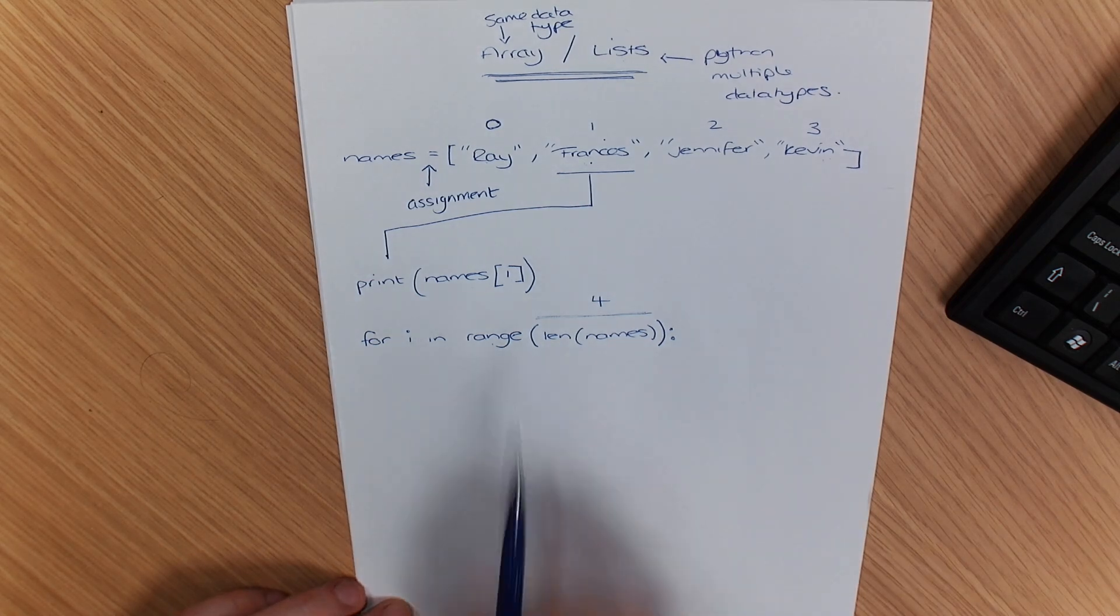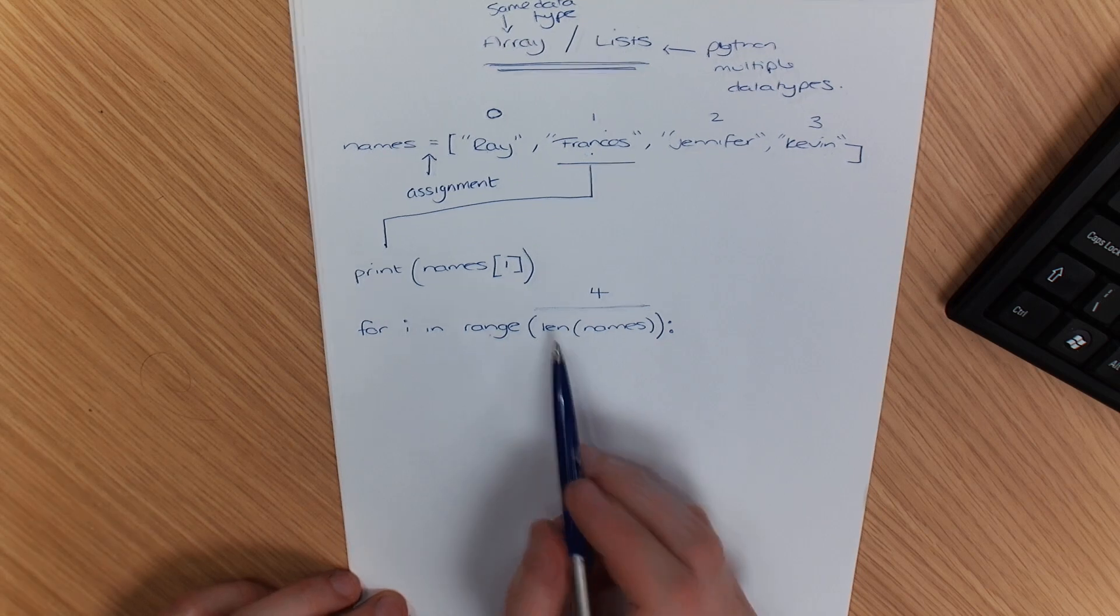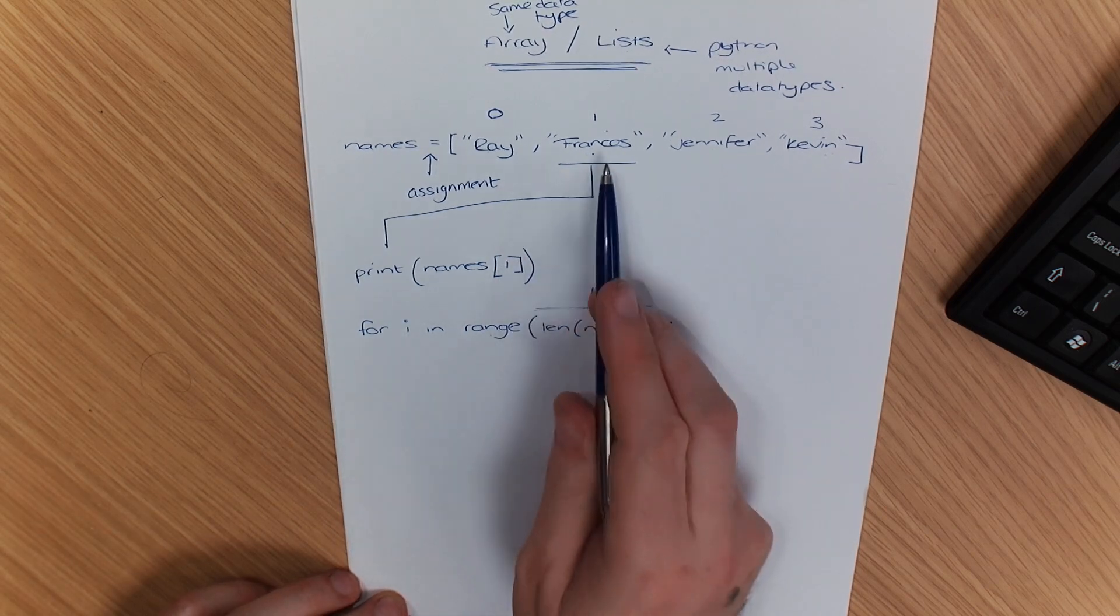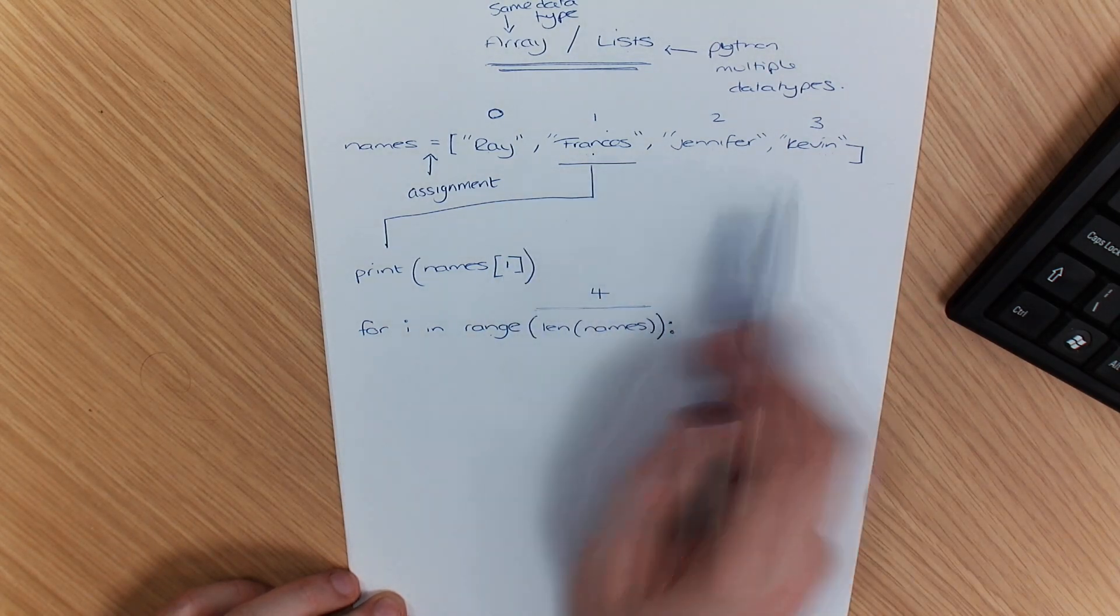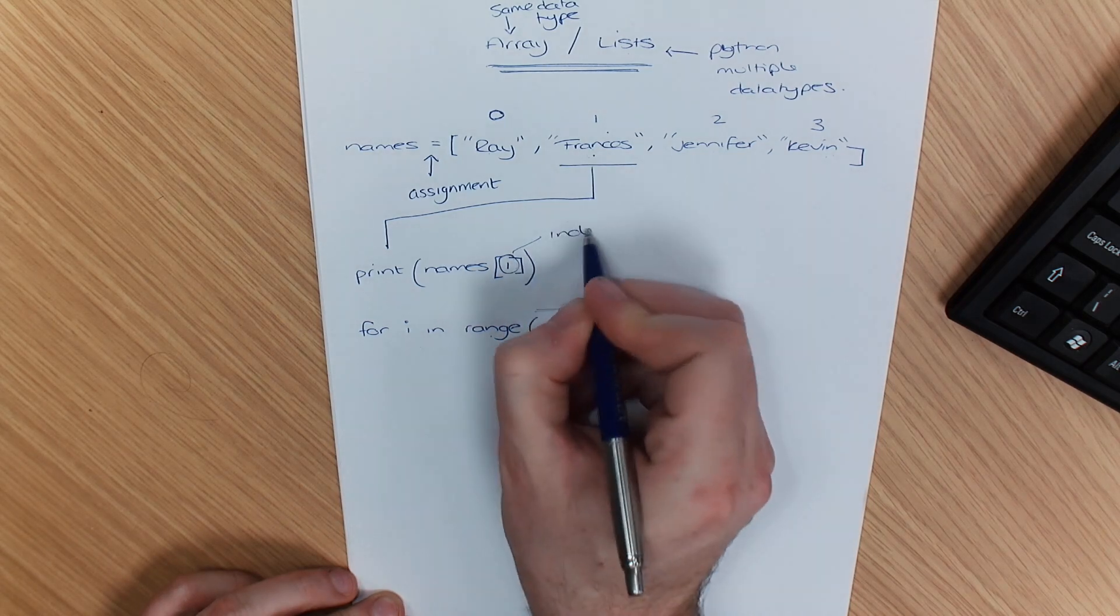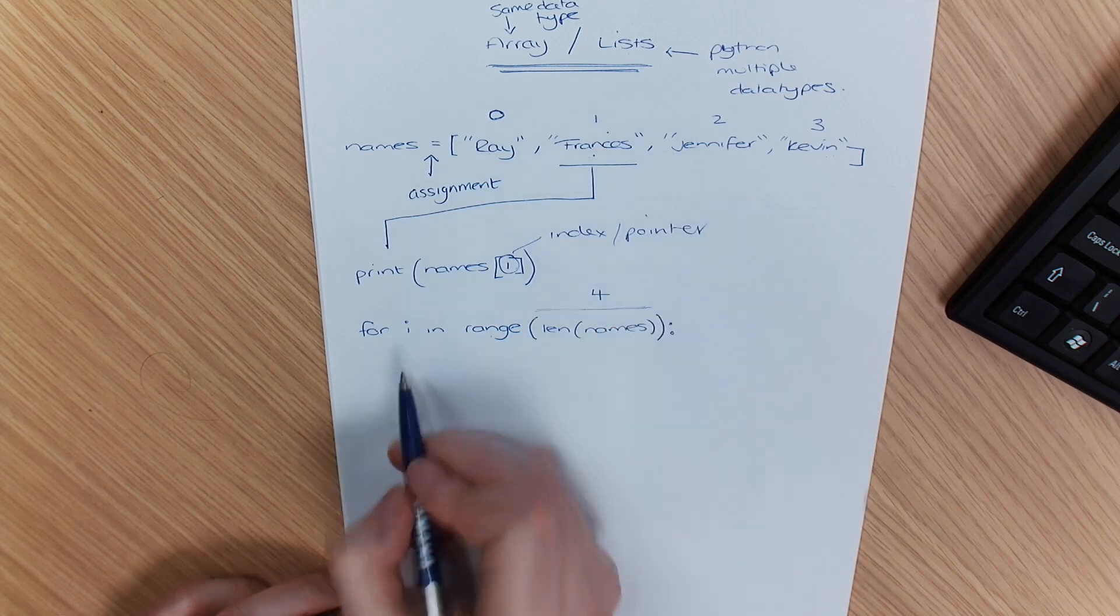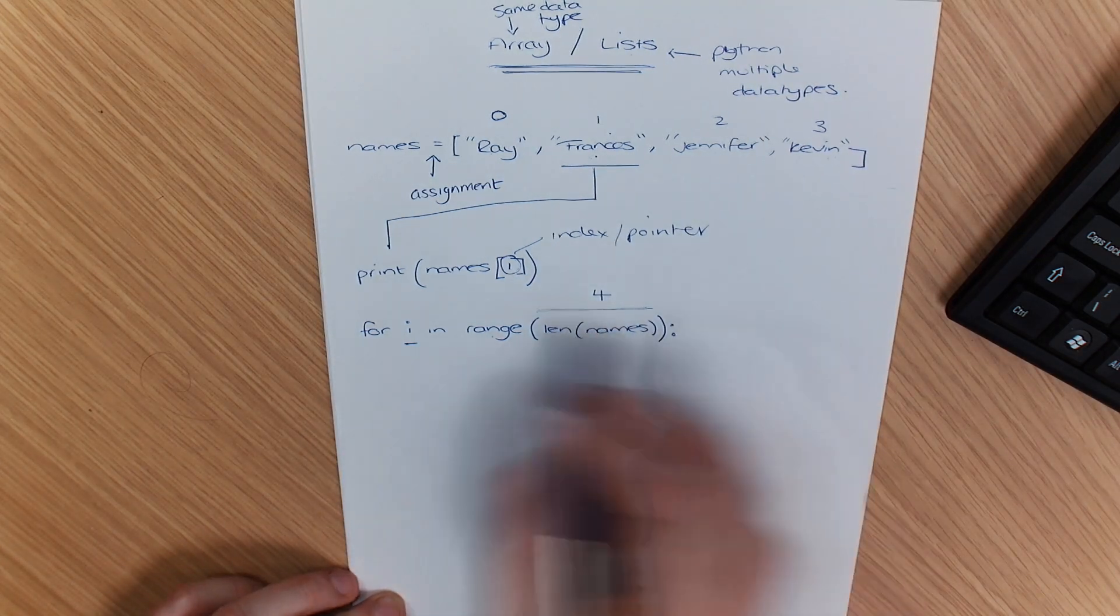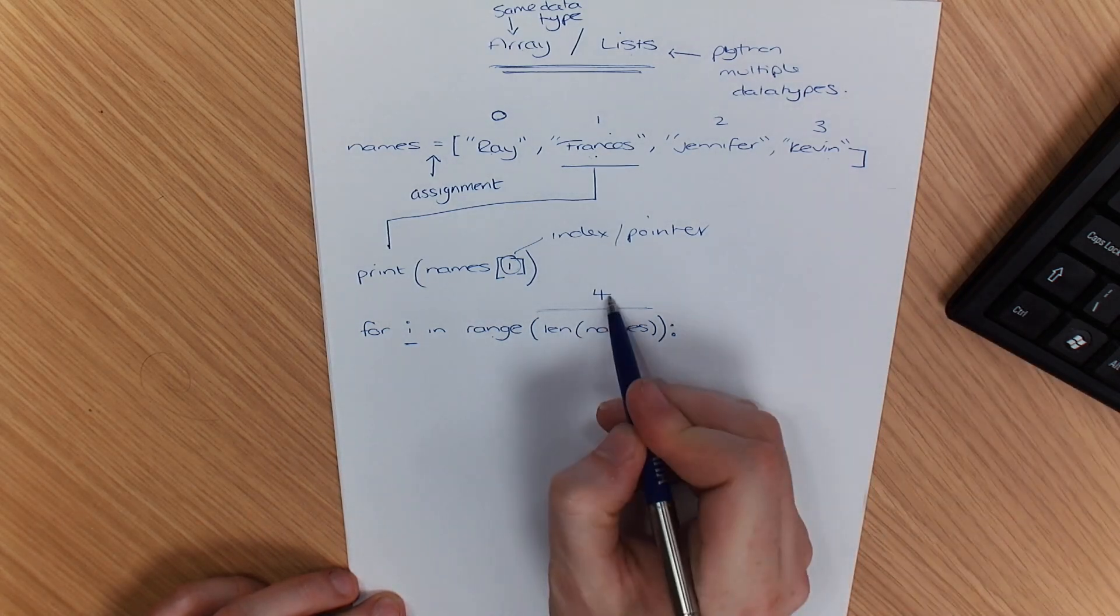Now, what I can do is use the index. So I can use the index of I for names. In this case, it was number one, or it could have been two, or it could have been three, to point. So you use this as a pointer. So this is your index, and you use it as a pointer to tell you where you're at. Now, by using I, I would start at, it would go one, two, it would start at zero, but it would increase four times.